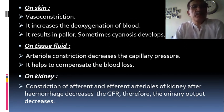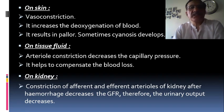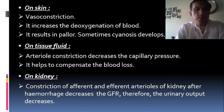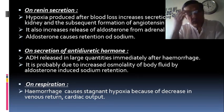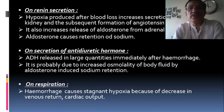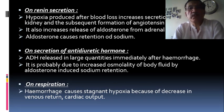On the skin, vasoconstriction in blood vessels increases deoxygenation of the blood, resulting in pallor; sometimes cyanosis develops. On tissue fluid, arteriole constriction decreases hydrostatic pressure, helping compensate for blood loss. On the kidneys, constriction of afferent and efferent arterioles decreases GFR and therefore urinary output decreases. On renin secretion, hypoxia after blood loss increases secretion of renin from the kidney and subsequent formation of angiotensin II, which also increases release of aldosterone from the adrenal cortex, causing retention of sodium and fluid.